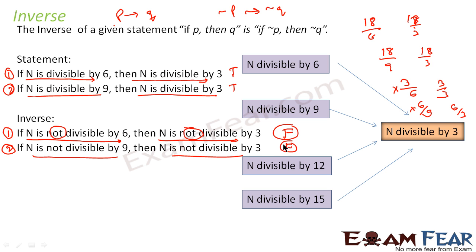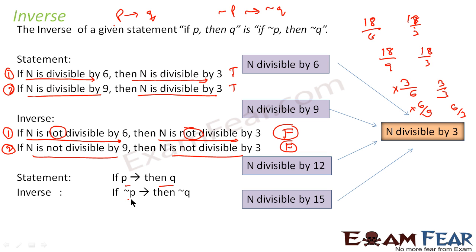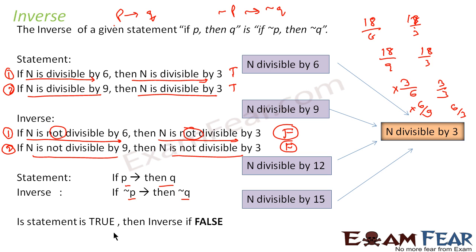So, what we have seen here: if p to q is the statement, then complement of p to complement of q is the inverse. And if the statement is true, then the inverse is false. And if the statement is false, then the inverse is also false.